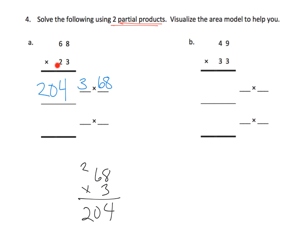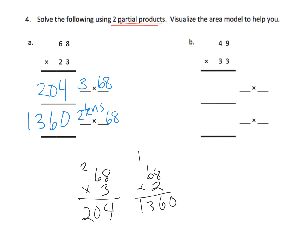We write 204 as the first partial product. As the second partial product, we have 2, but that's really two tens times 68, so we do 68 times 2 and get 136, but that's 136 tens — which becomes 1,360. Adding our two partial products: 4 and 0 is 4, 0 and 6 is 6, 2 and 3 is 5, and then 1, giving an answer of 1,564.